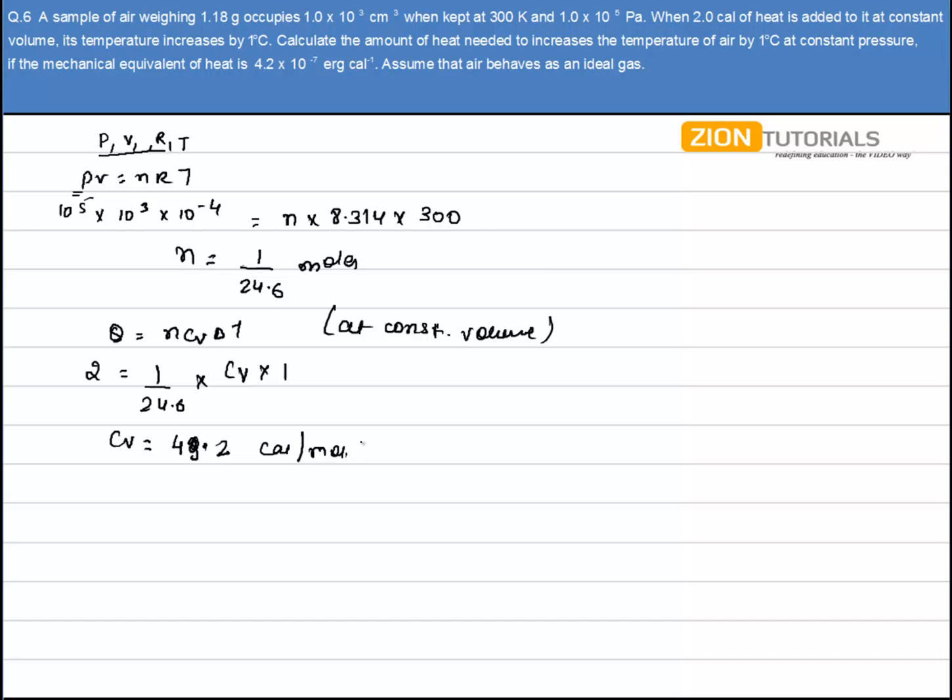I do have a value of Cv now, and we know Cp minus Cv is equal to R, so I'll get the value of Cp from here.